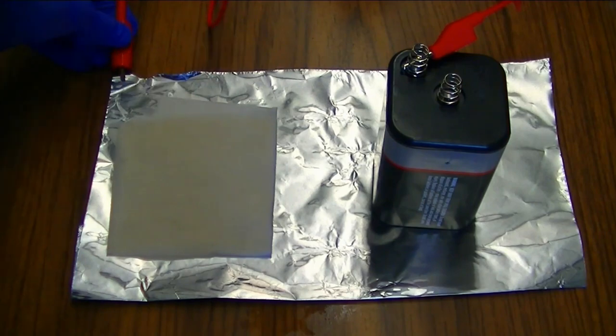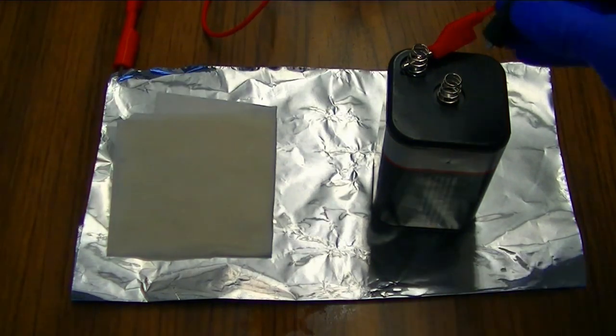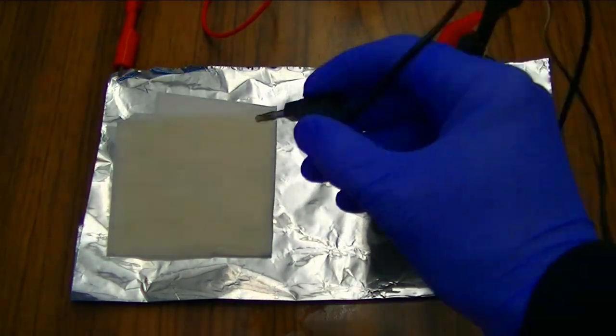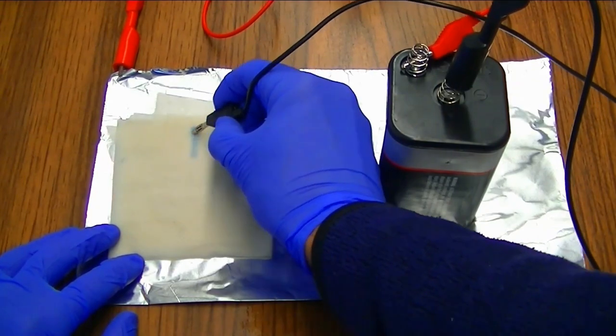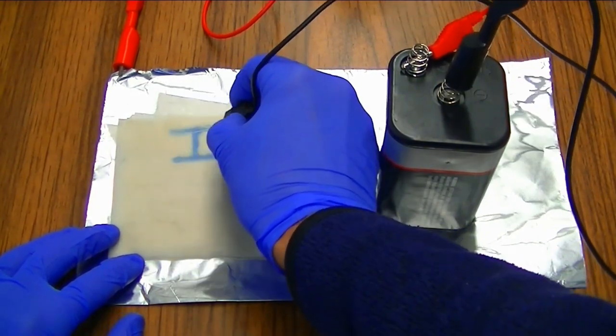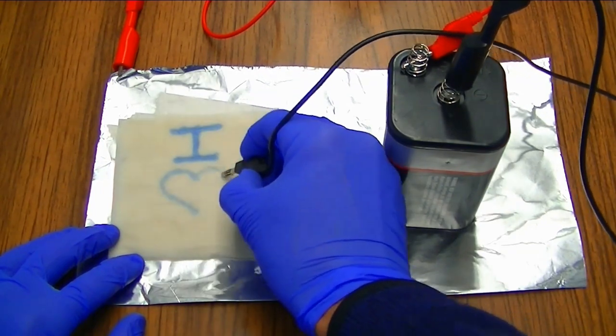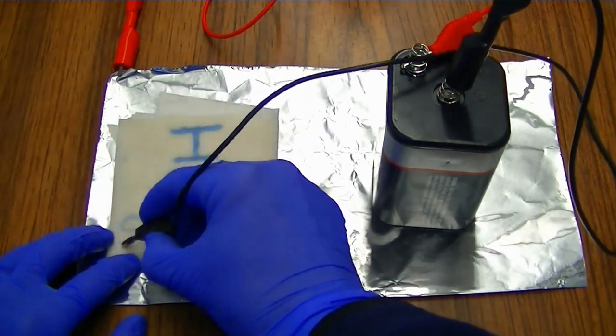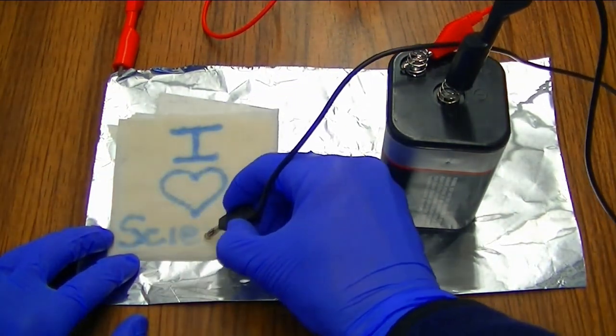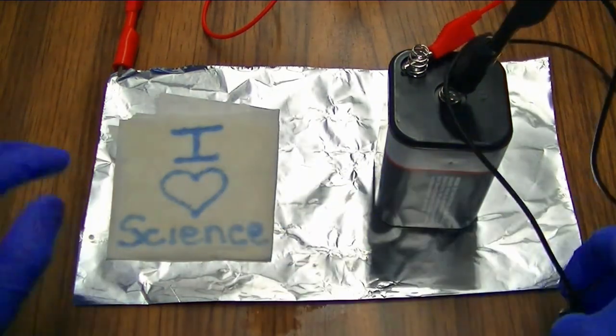The positive terminal of the battery is connected to the aluminum foil with the wire. The negative terminal of the battery is connected to a second wire. When we touch this second wire to the surface of the paper towel we're able to write messages that look blue in color. Isn't that cool?